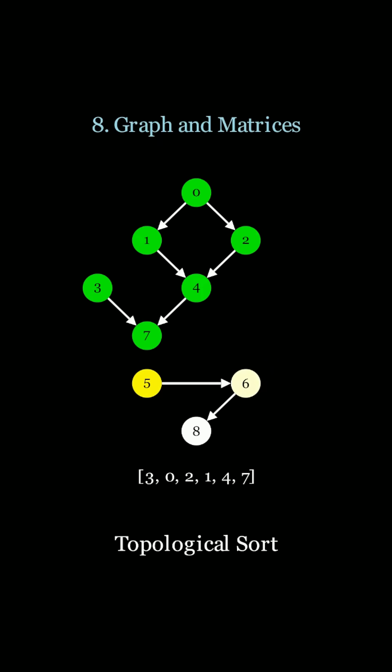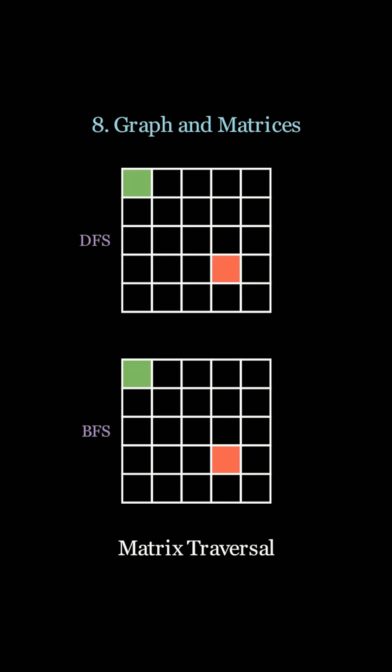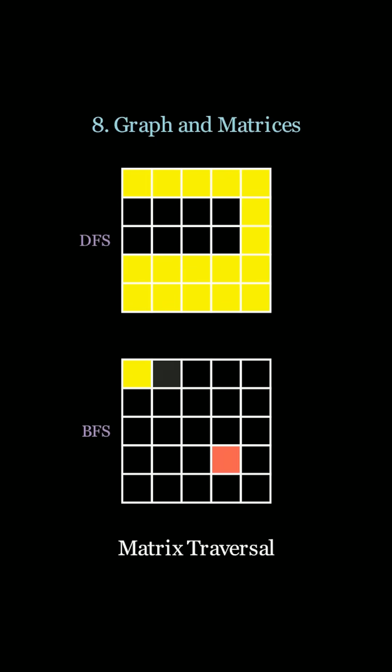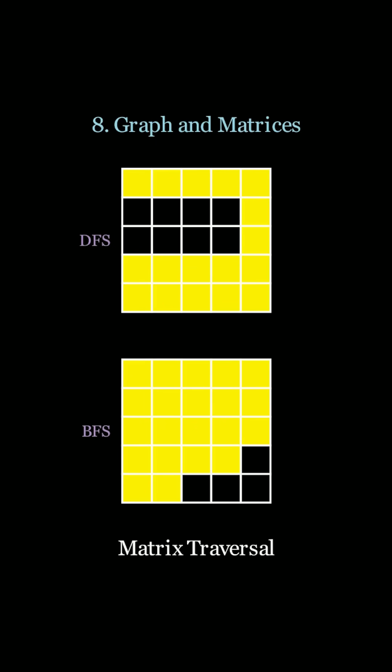And we can also visit islands separately, such as five, six, and eight. Next up we have matrix traversal. Once again, we have the concept of DFS, where DFS explores the maximum possible path and BFS explores layer by layer using the child nodes.